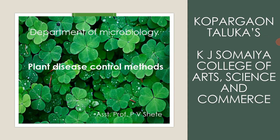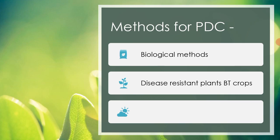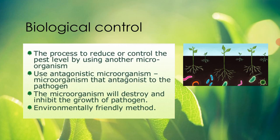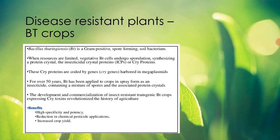In the last online lecture, we completed the chemical methods and the eradication method. In this online lecture, we will start with the second one — disease-resistant plants, Bt crops. So what is Bt? Bt stands for Bacillus thuringiensis, which is a gram-negative spore-forming soil bacterium.